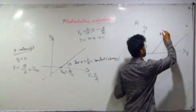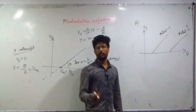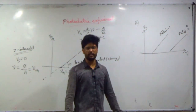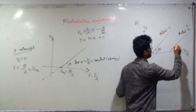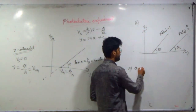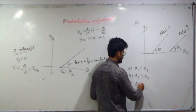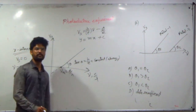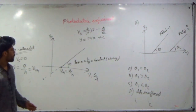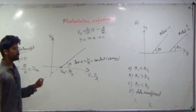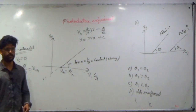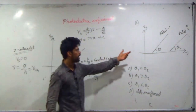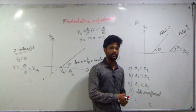Consider two different metals giving two different graphs with slopes theta one and theta two. The slope of stopping potential versus frequency graph is h over e, which is a universal constant — it does not depend on the metal. So theta one equals theta two; the slopes are the same for all metals. The x-intercepts differ because they depend on the work function phi, which is metal-dependent.